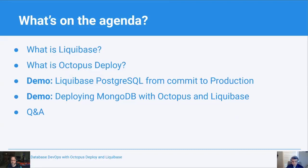First, what we're going to be talking about is what is Liquibase. We're also going to talk about Octopus Deploy. We've got two really great demos today: taking a PostgreSQL database from commit all the way through to production, and a second demo deploying MongoDB with Octopus and Liquibase. And then we've got a Q&A that will roughly be about 10 minutes.